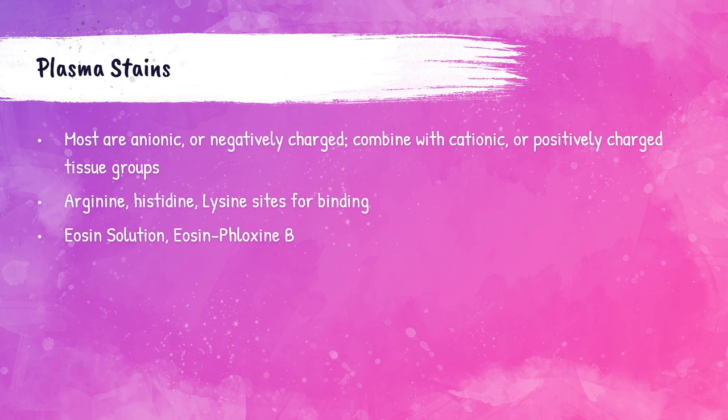Plasma stains are most commonly negatively charged anionic dyes that combine with positively charged cationic tissues. Arginine, histidine, and lysine are the amino acids most commonly serving as dye-binding sites. The two plasma stains discussed are eosin solution and eosin phloxine B.